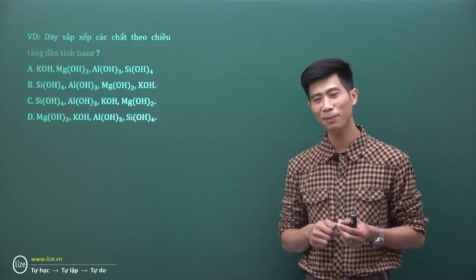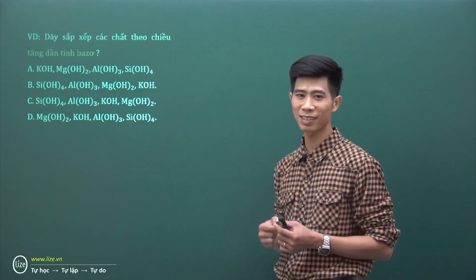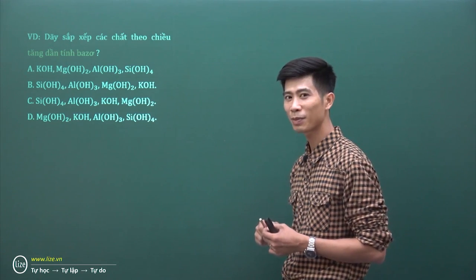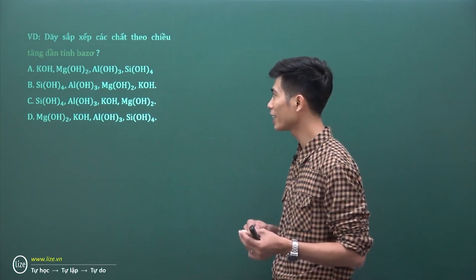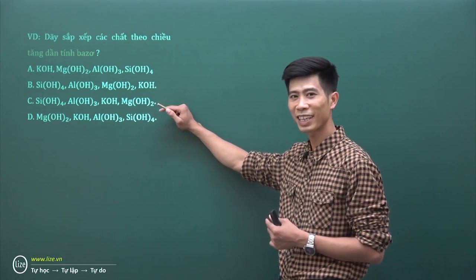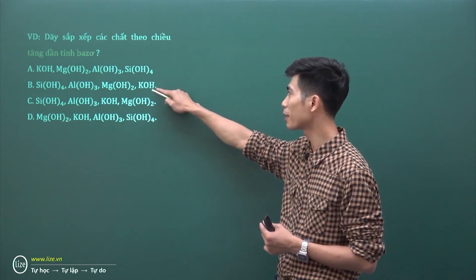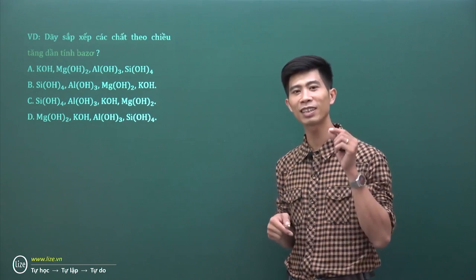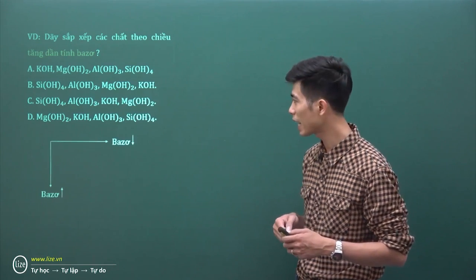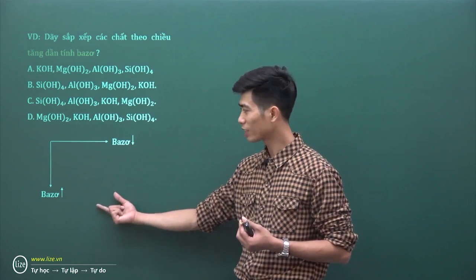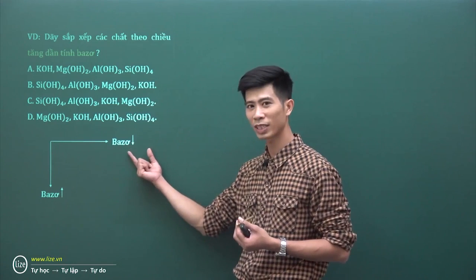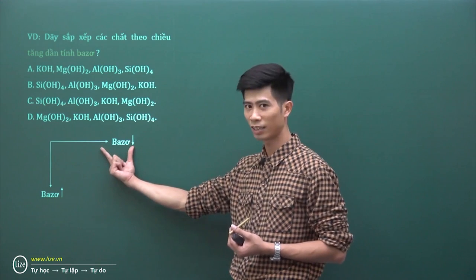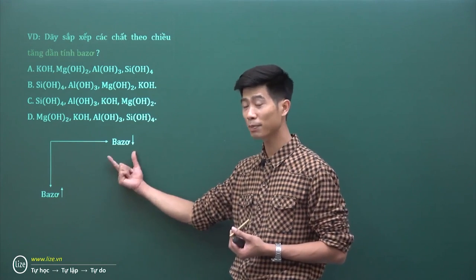Ví dụ tiếp theo: dãy sắp xếp các chất theo chiều tăng dần tính bazơ là dãy nào? Nhớ cho thầy: trong chu kỳ thì tính bazơ giảm dần, còn trong nhóm thì tính bazơ tăng dần, nếu sắp xếp theo chiều tăng dần của điện tích hạt nhân. Nếu sắp xếp theo chiều giảm dần của điện tích hạt nhân thì trong một chu kỳ tính bazơ tăng dần, trong một nhóm tính bazơ giảm dần.